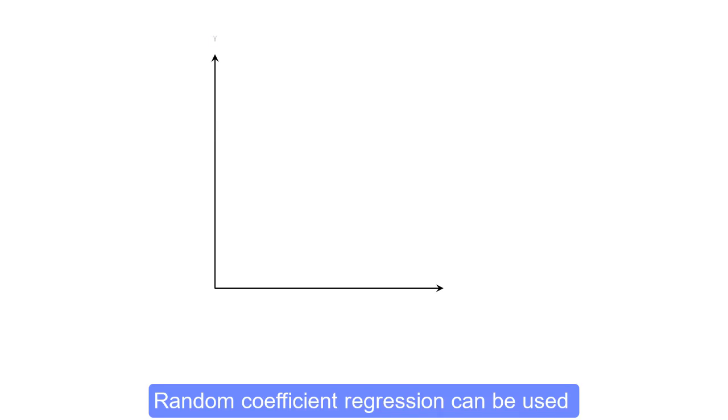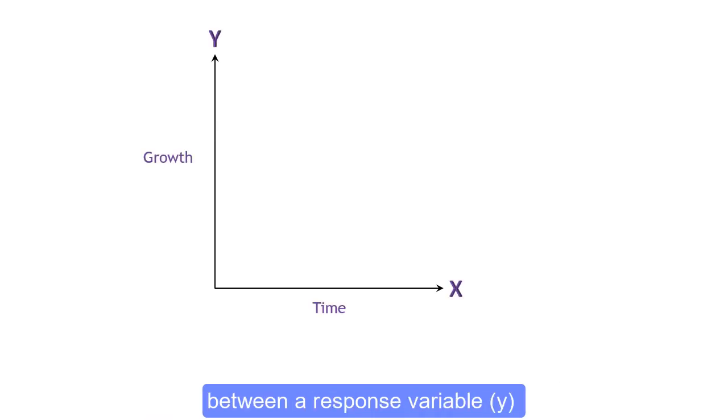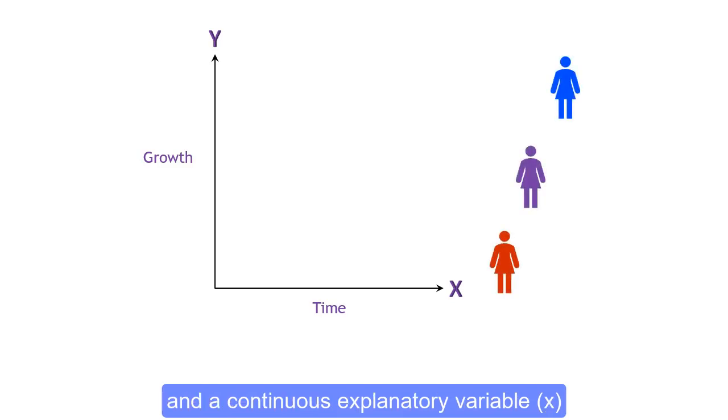Random coefficient regression can be used when we want to explore the relationship between a response variable y and a continuous explanatory variable x.